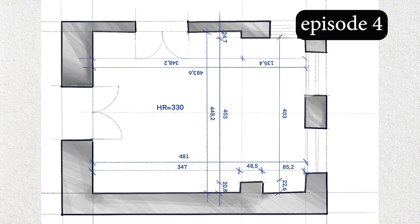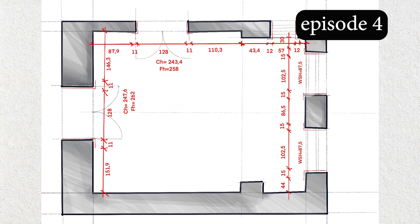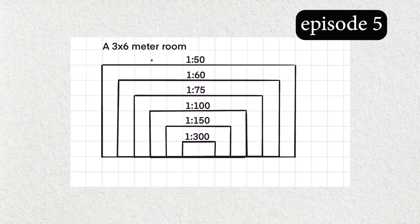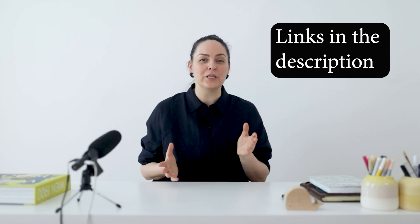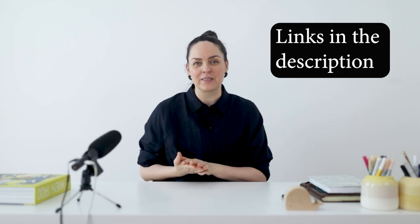In order to complete today's exercise, you will need two things. You'll need to have the measurements of your room — if you don't have them, make sure to check out episode 4 in this playlist. And you'll need to have some basic understanding of floor plan metric scales — if you don't, make sure to check out episode 5 in this playlist. I will leave a link to each of these videos and the playlist in the description.